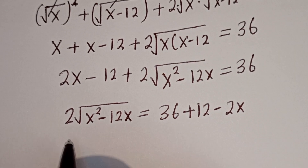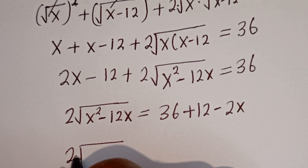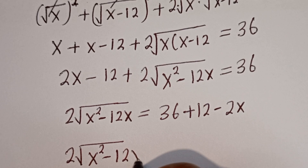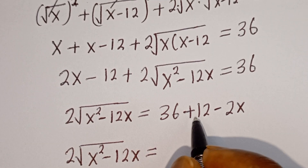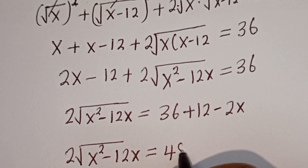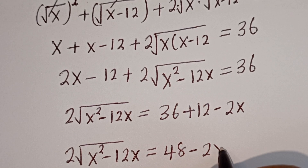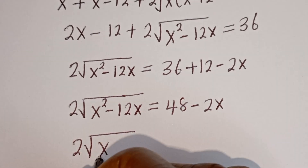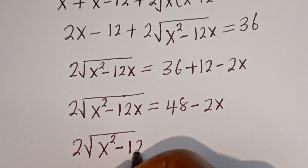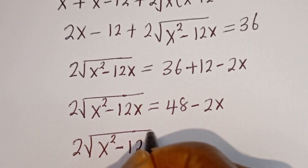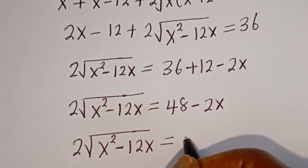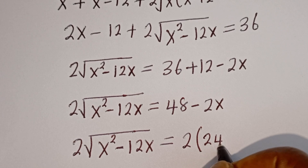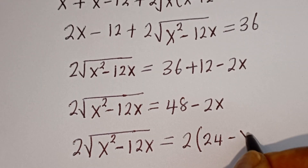We have 2 times square root of x squared minus 12x is equal to 48 minus 2x. We can factor 2 out on the right side: we get 2 brackets 24 minus x. Dividing both sides by 2, we have square root of x squared minus 12x is equal to 24 minus x.